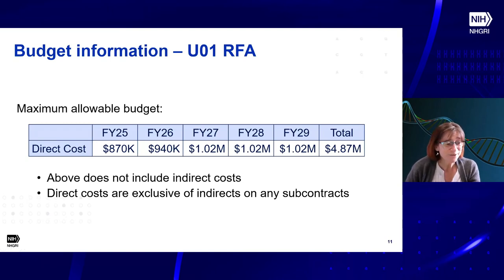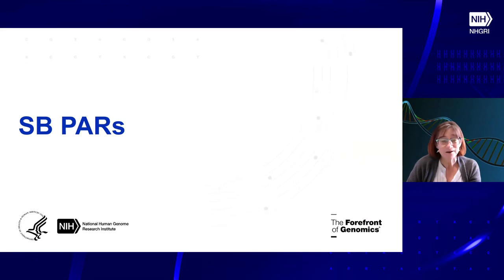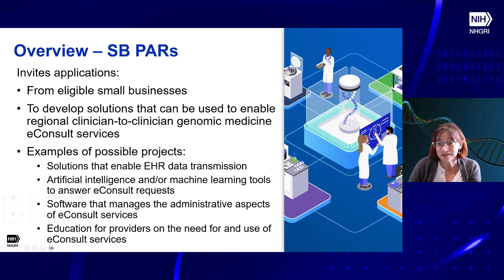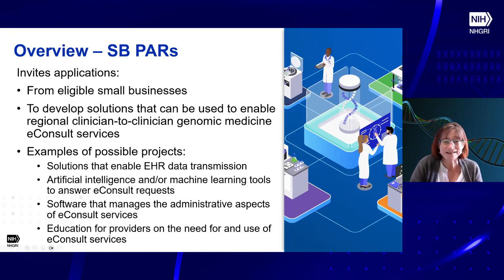No more questions on the U01 RFA, so let's go to the next set — the small business PARs. These are different. They invite applications from eligible small businesses. What we're really asking small businesses to do is develop solutions that can be used to enable regional clinician-to-clinician genomic medicine e-consult services. The other RFA was about creating services; this is about creating things for those services to use. Examples of potential projects include creating solutions that enable EHR data transmission. Those examples in the funding opportunity notices are not an exclusive list — they're just to get your minds thinking.